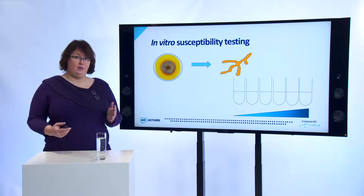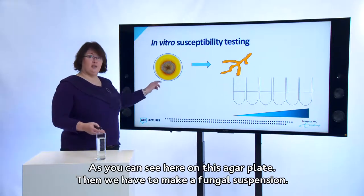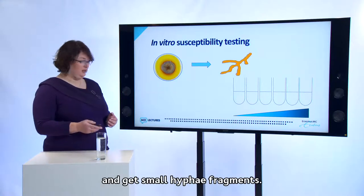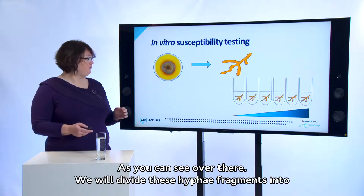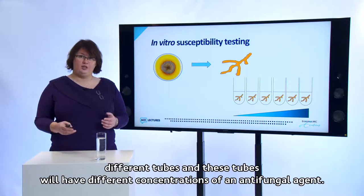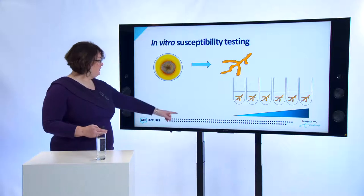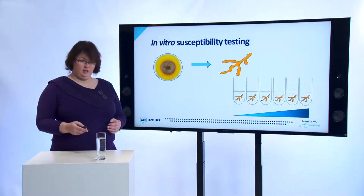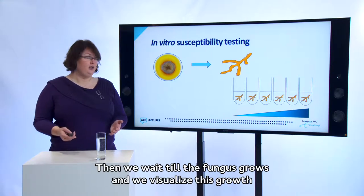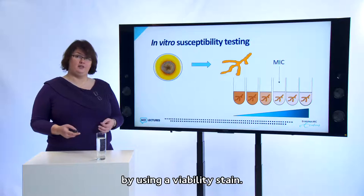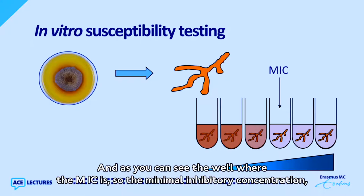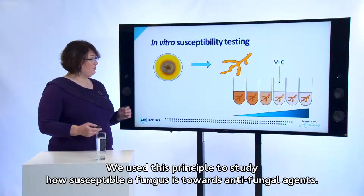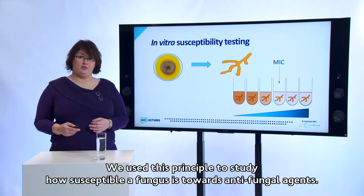To test susceptibility, we culture the fungus in the lab, make a fungal suspension with small hyphal fragments, and divide them into tubes with different concentrations of an antifungal agent — from very low to very high concentration. We wait for the fungus to grow and visualize growth using a viability stain. The minimal inhibitory concentration (MIC) is the concentration at which the fungus is inhibited in growth. This principle allows us to study how susceptible a fungus is to antifungal agents.